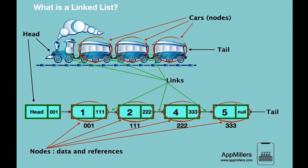Then we have nodes, which are the elements of the linked list. A node consists of two parts: the value of the node, and a reference to the next node, which creates a link between the current node and the next node. The reference is the physical location of the next node stored in the current node. For example, this node's physical location is 111, so that location is stored in the first node.